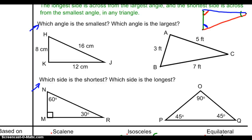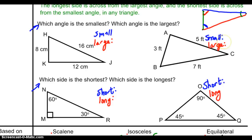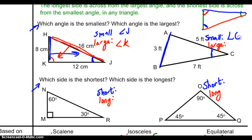Pause the video here and try to identify the smallest and largest sides and the shortest and longest angles of those two triangles. Alright, hopefully you've tried those. Let's take a look at the answers. Since the shortest side is HK, my smallest angle will be angle J. Since the longest side is HJ, across from it is my largest angle, which will be angle K.